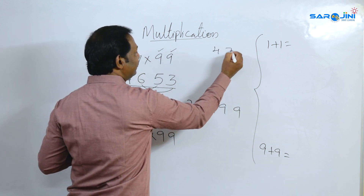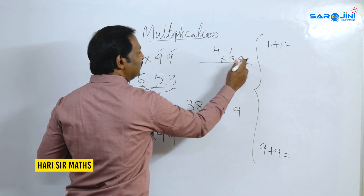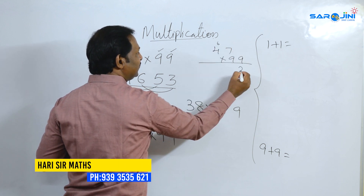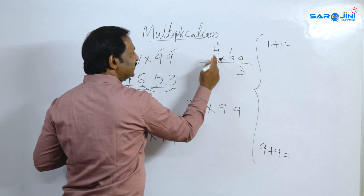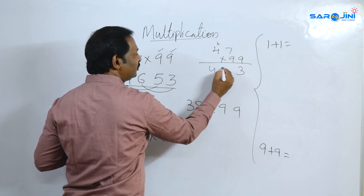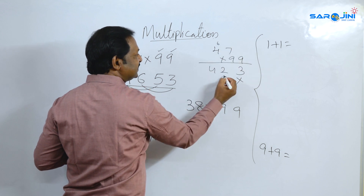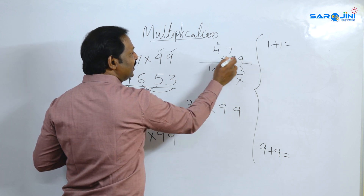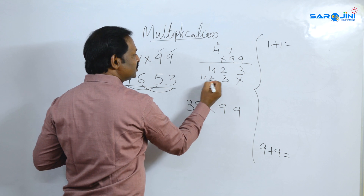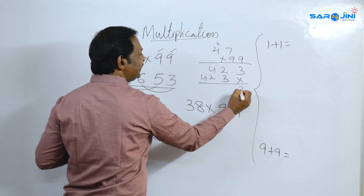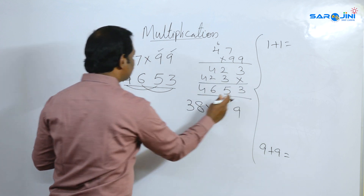So 47 multiplied by 99. School method verification: 9 times 7 is 63; 9 times 4 is 36 plus 6 equals 42. So the digits are 4, 6, 5, 3. Same answer — confirmed.